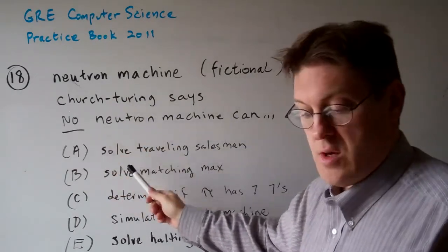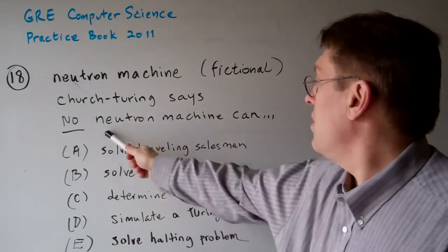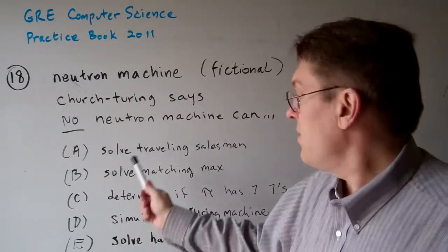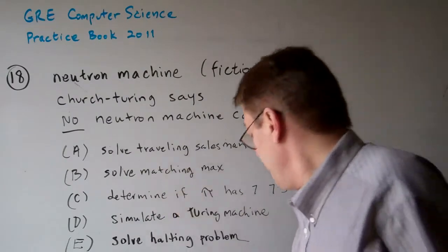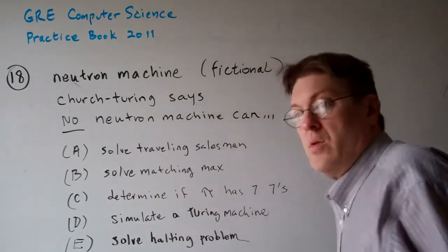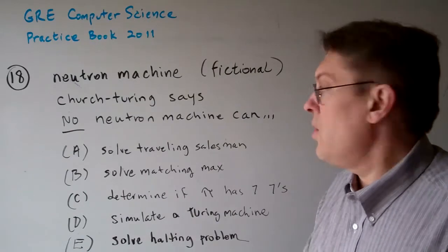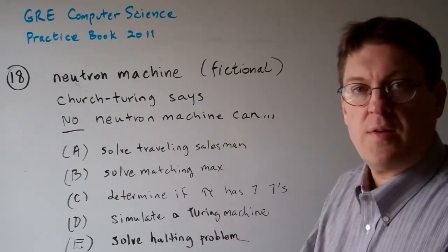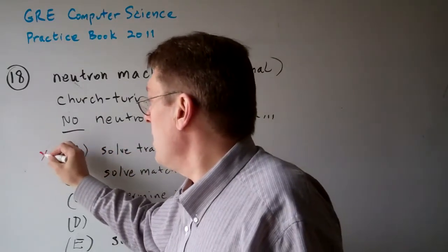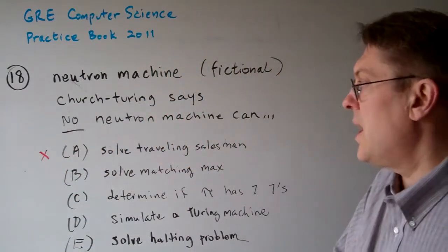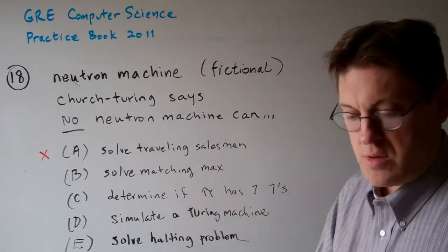Option A: That no neutron machine can solve the traveling salesman problem in polynomial time. Well, we don't know. It's never been proven. We don't know if his machine can solve it or not. The Church-Turing thesis has got nothing to do with that. So maybe it does, maybe it doesn't. But it's not a result of Church-Turing.